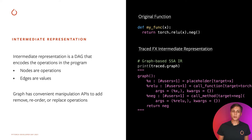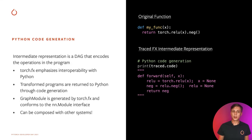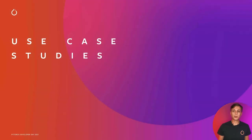You will see on the right a string representation of this graph structure, containing the ReLU and neg operations that were observed during tracing. Finally, Torch.fx provides Python code generation from this IR. You will see on the right the code that is generated from the IR, similarly containing the ReLU and neg operations. Since Torch.fx emphasizes interoperability with Python, transformed programs are returned to Python through this mechanism. Transformed code is wrapped in an NNModule subclass called GraphModule, and the generated code can be called just like any other NNModule instance, or passed to other systems such as TorchScript.